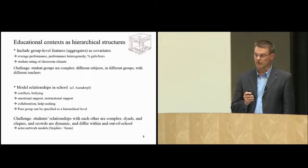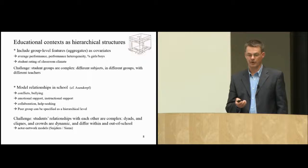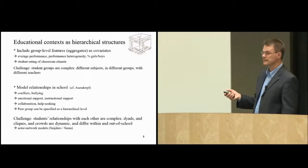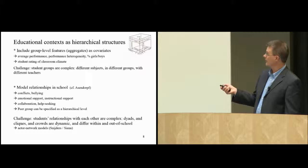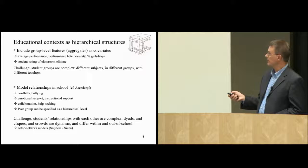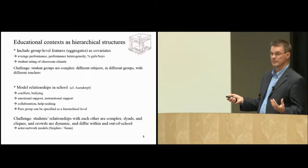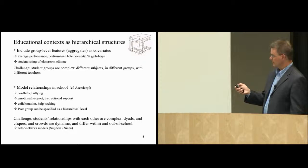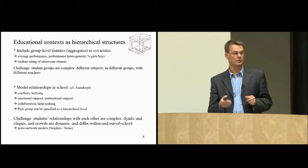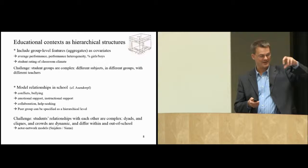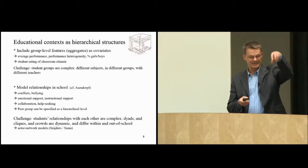We can model relationships in school that drive learning, looking at the modeling of conflicts. Conflict and bullying could be relevant dependent variables. But we could also think of other variables, either student-reported or teacher-reported aspects such as emotional support, instructional support, student-reported collaboration with other students, or help-seeking from the teacher.